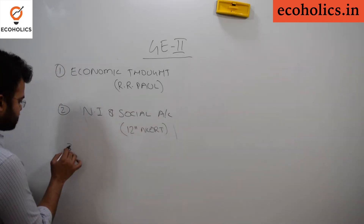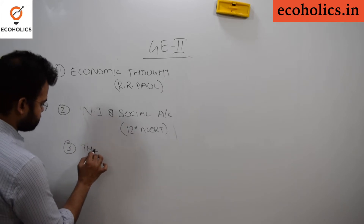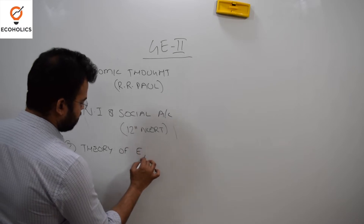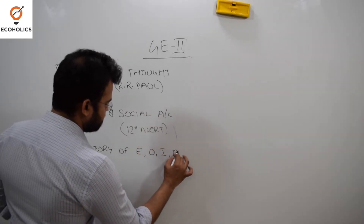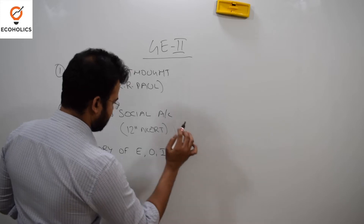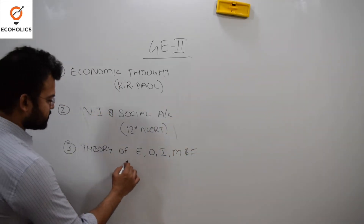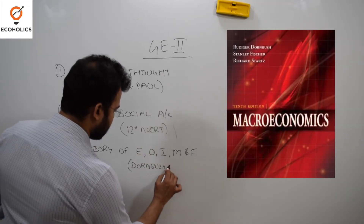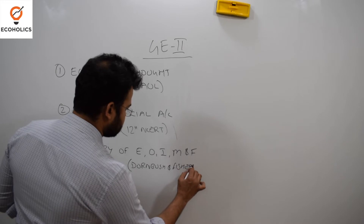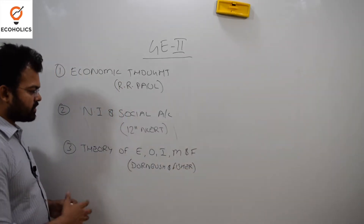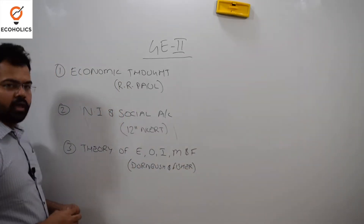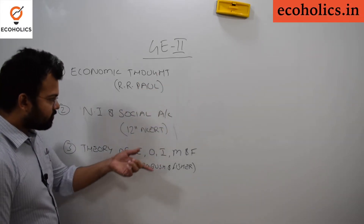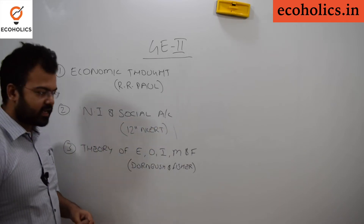The third topic is Theory of Employment, Output, Inflation, Money and Finance. For this, the best book is Dornbusch and Fisher. This particular book will also be helpful for the second topic — National Income and Social Accounting.